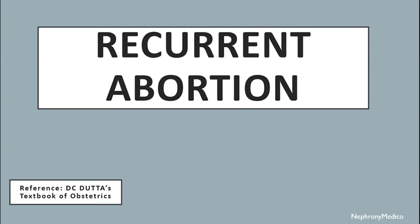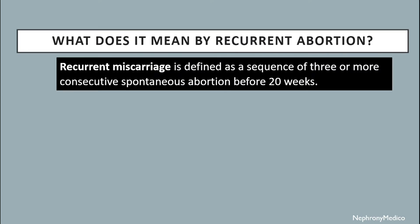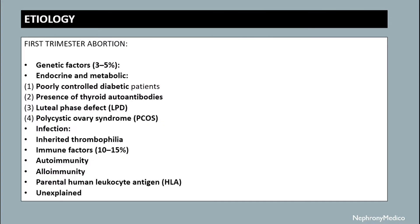Hello and welcome. Let's talk about recurrent abortion. Recurrent miscarriage or abortion is defined as the sequence of three or more consecutive spontaneous abortions before 20 weeks.